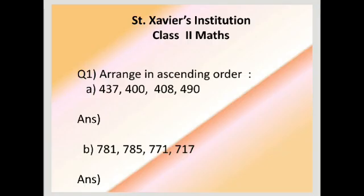Here is our question one: arrange in ascending order - 437, 400, 408, 490. So which is the smallest? 400.